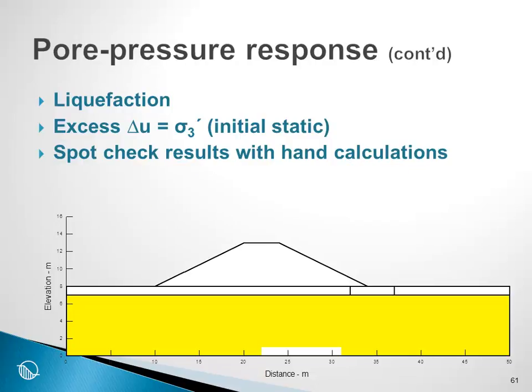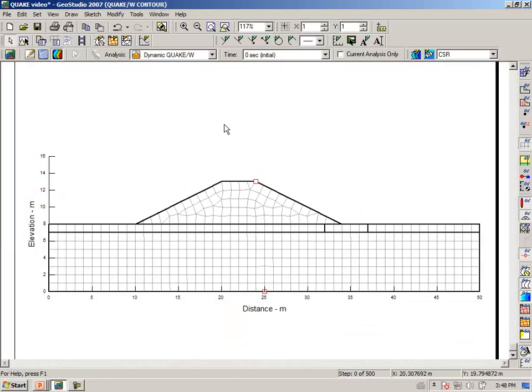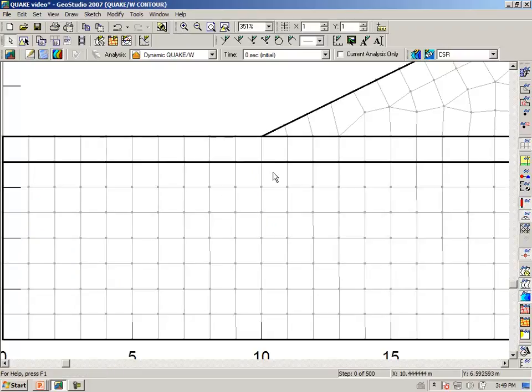So what we want to do is maybe spot check the cyclic stress ratio. If we go back to GeoStudio, let's turn off the contours, turn on the mesh, turn off the material colors, and zoom into an area. We will look at the results at a node that is two elements below the desiccated crust.